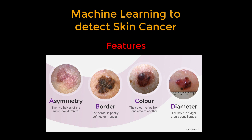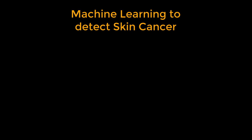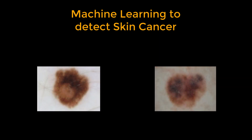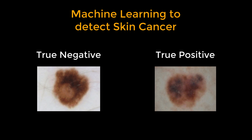Some moles are obviously benign, while others are clearly cancerous. But there are some cases where moles look similar but may be incorrectly classified. With computers, the hope is that we can give them several million examples of each category, and then have them correctly classify a new picture of a mole as either cancerous or benign.